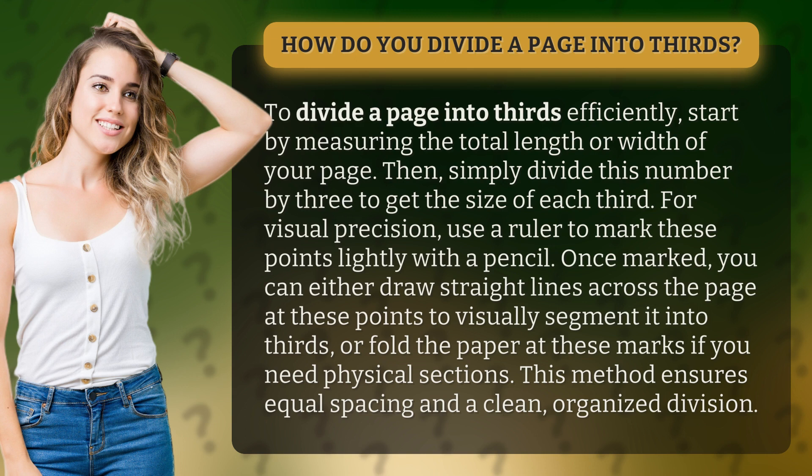For visual precision, use a ruler to mark these points lightly with a pencil. Once marked, you can either draw straight lines across the page at these points to visually segment it into thirds, or fold the paper at these marks if you need physical sections. This method ensures equal spacing and a clean, organized division.